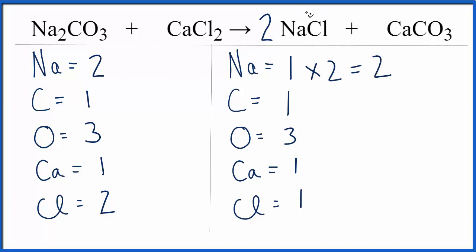And then this two applies to the whole compound here. So the chlorine's one times two, that would equal two. And now everything's the same on each side of the equation.